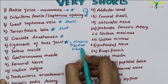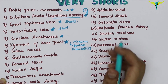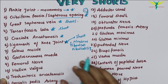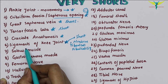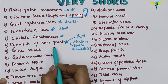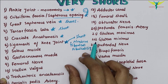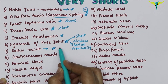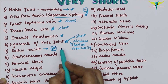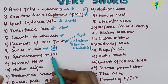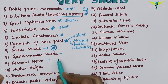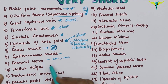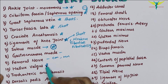Remember these points — the ligaments of the knee joint can be asked as very shorts or shorts, so learn them in depth. The soleus muscle is the most favorite question of the examiner. The gastrocnemius muscle is important. The femoral nerve is very important — write about its course and the muscles it supplies. Hallux valgus is also a favorite examiner question.